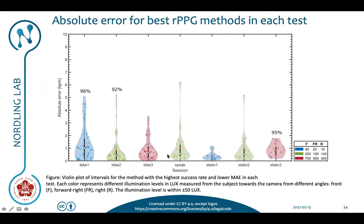Let us now pick the best of these methods for each of the conditions and look at the absolute error. The thing is that different methods for estimating the heart rate are good under different conditions. That's why we need a dataset with very different conditions in order to find which method to use when. As you can see, all of these methods actually fail under some condition, meaning that none of them is good in every condition.